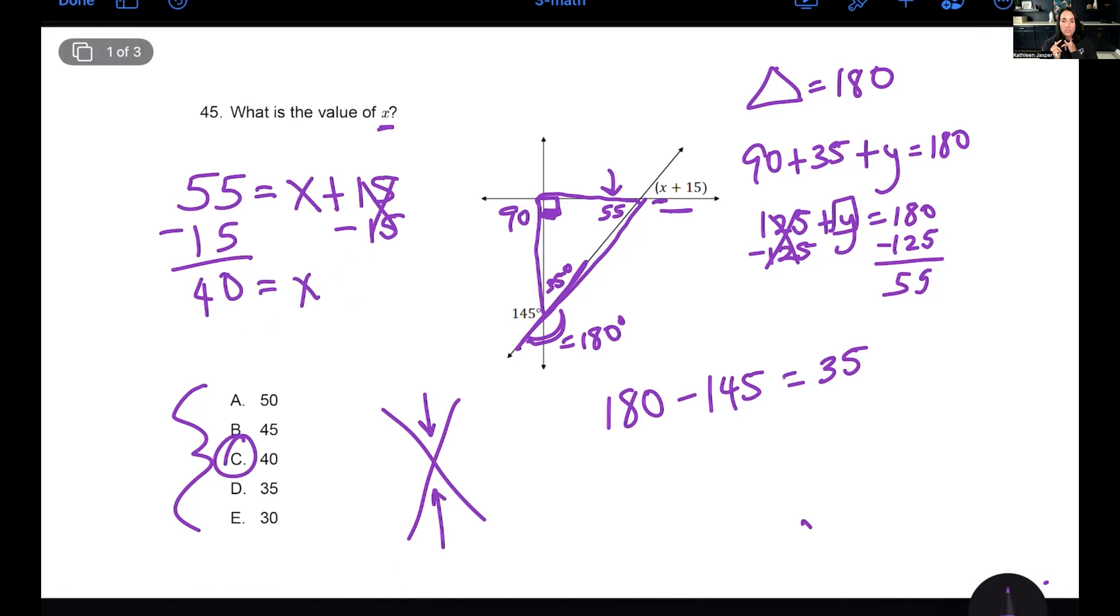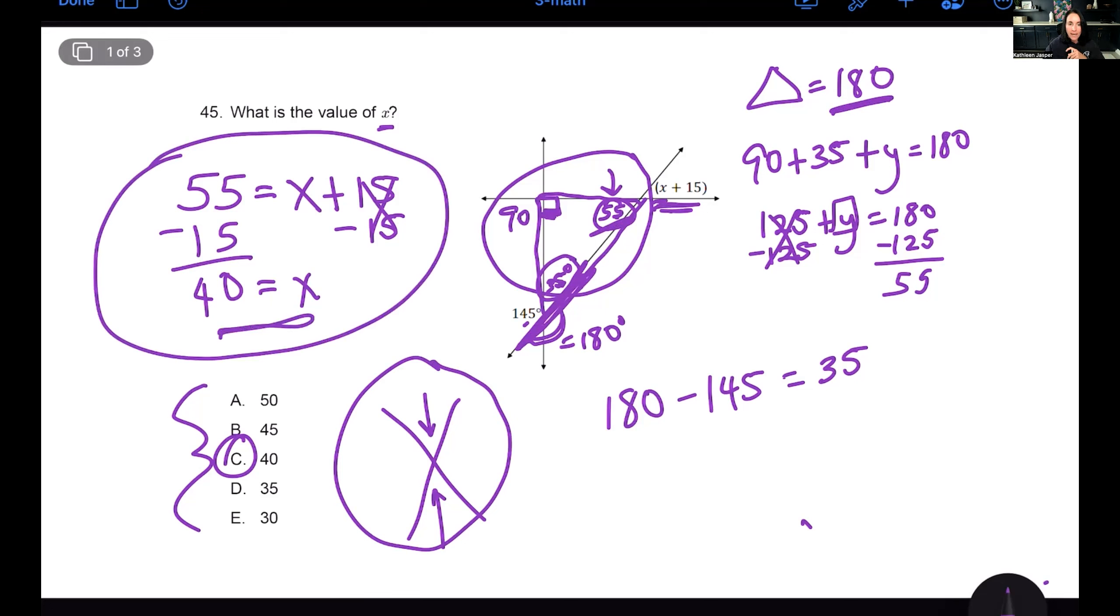Now let's solve for x again using algebra. Subtract 15 because that's a positive 15, so we do the opposite. Five minus five is zero. Five minus one is 40. 40 equals x. The answer is C. So notice we did a few things here. We figured out our supplementary angle first, which was this 35 degrees because 145 plus 35 equals 180.